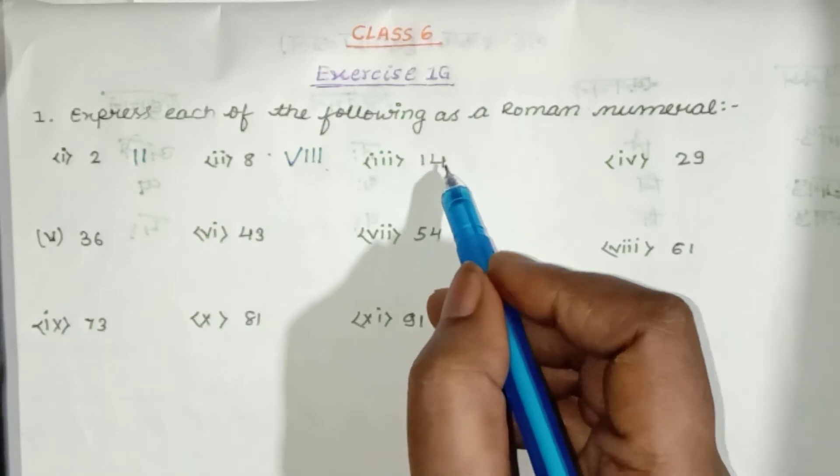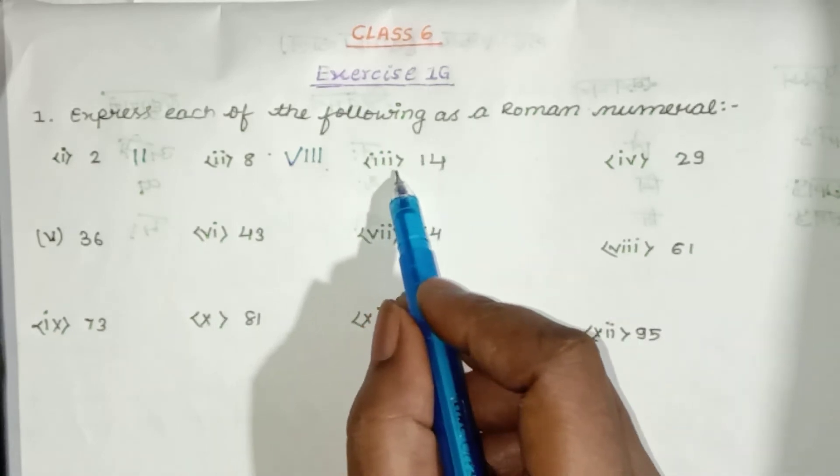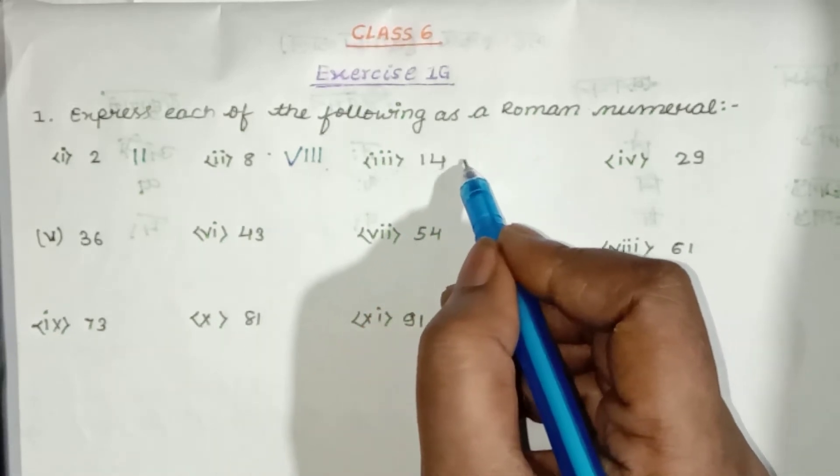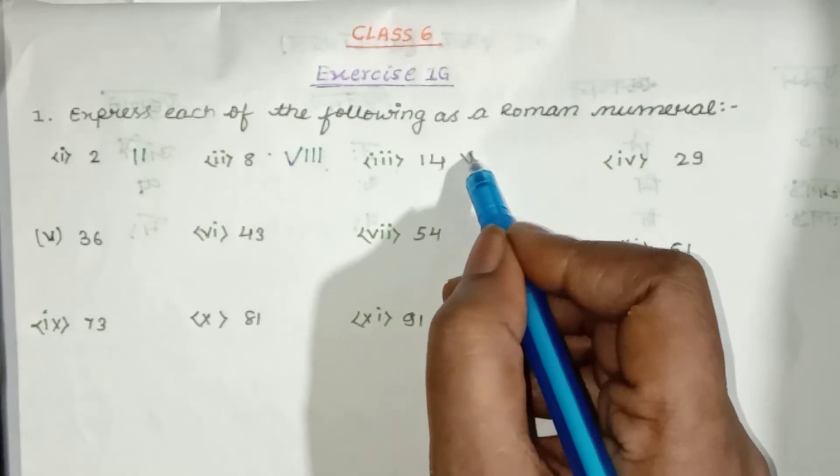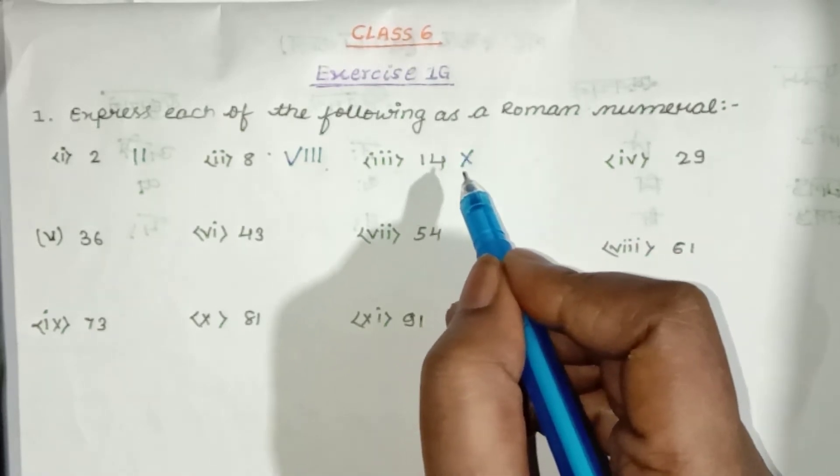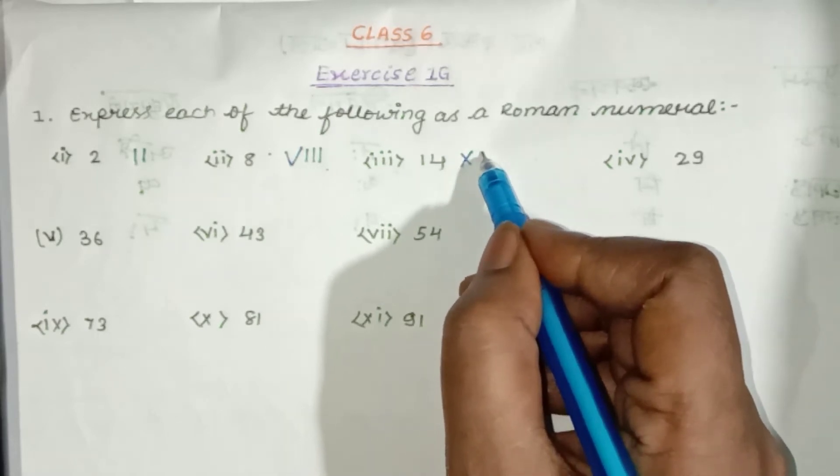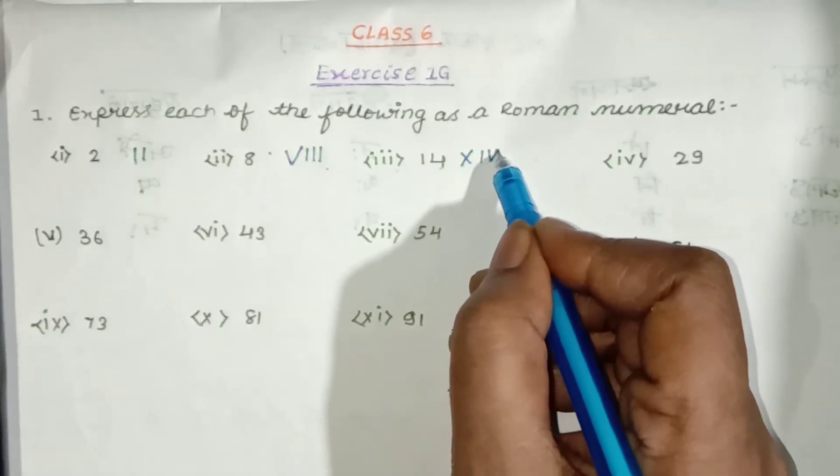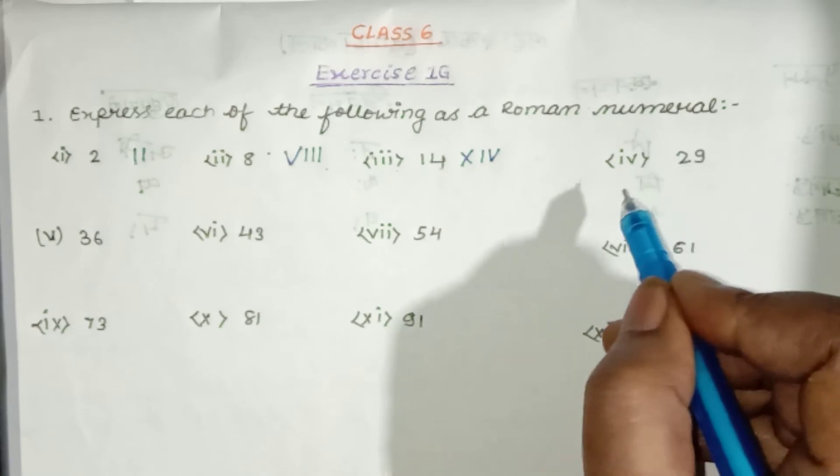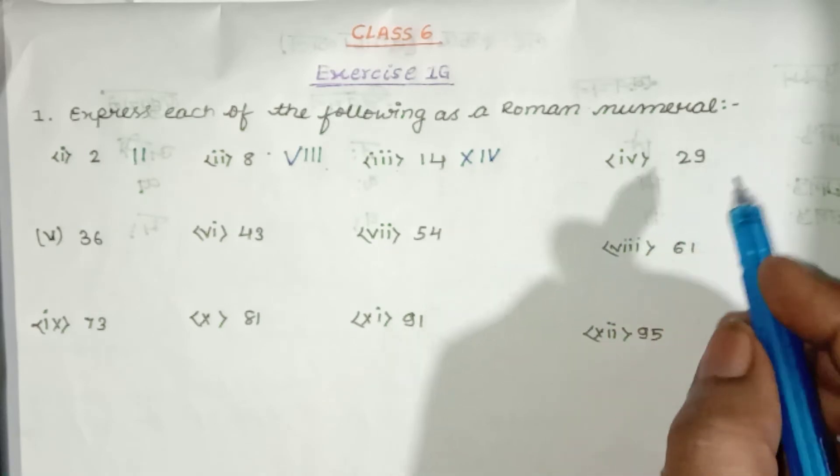This is 14. We will write it like this. 10 plus 4 is equal to 14. So we will write it like this. Now we will write it like this.